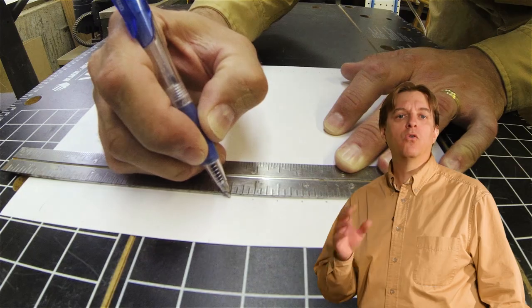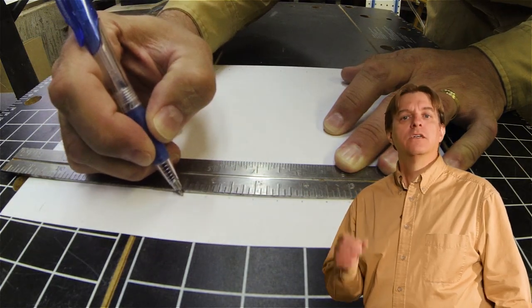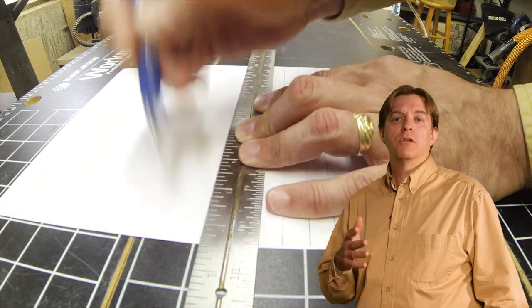If you wanted to get real fancy, you could make your own direct reading scale. Just mark off every half inch and label the marks with whole numbers starting with 0. Doing this, you don't need to remember to multiply by 2.